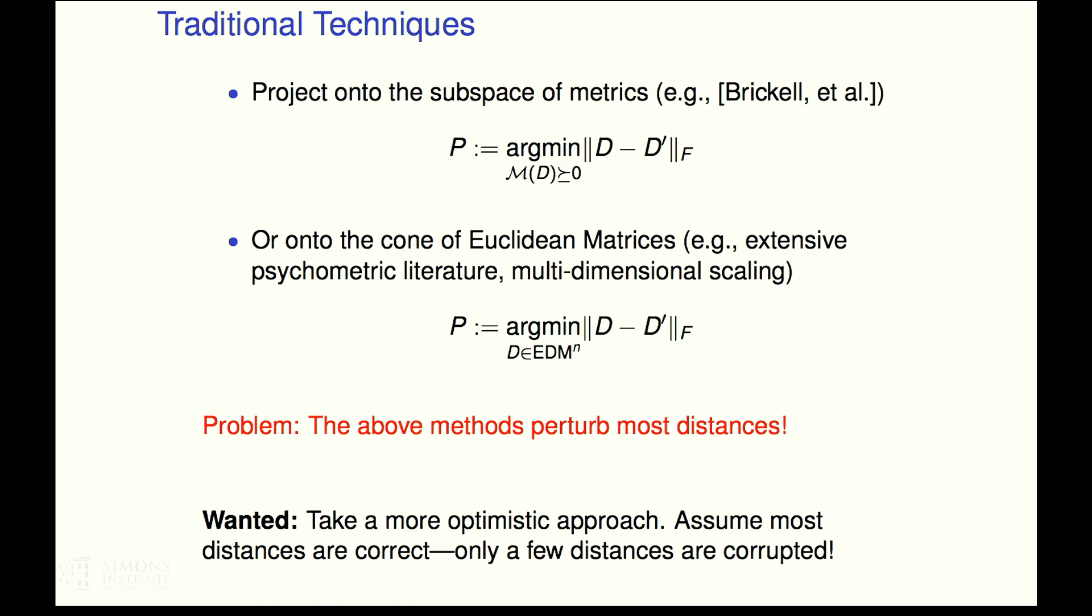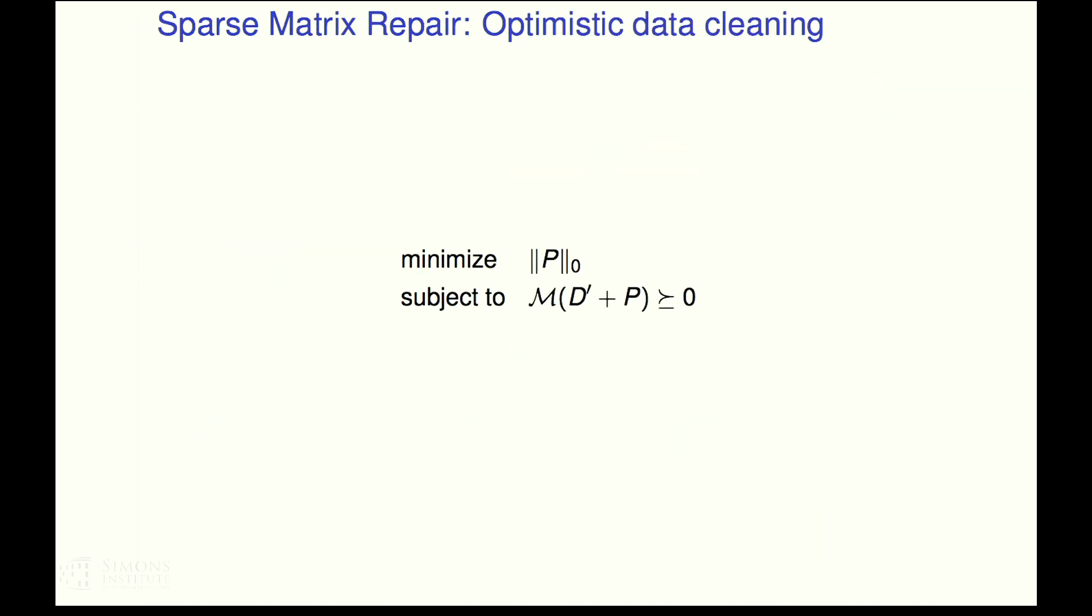I don't really like these solutions though because they perturb most of my original distances. In other words, I have to touch like all of my original data to clean things up. And I don't really like that. I would prefer to take a more optimistic approach and assume that most of my original distances are correct. And actually just a few of the distances are corrupted. If I collect data, a few of my sensors are noisy, but all the rest of them are pretty good. I don't want to have to, this somehow feels like seriously distorting all of the original data I collect. I want a more optimistic approach.